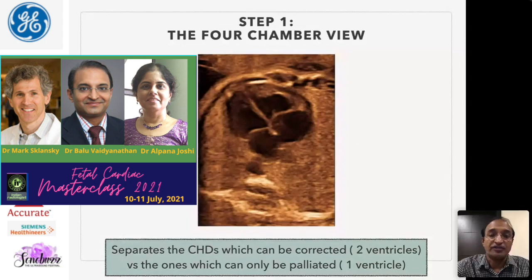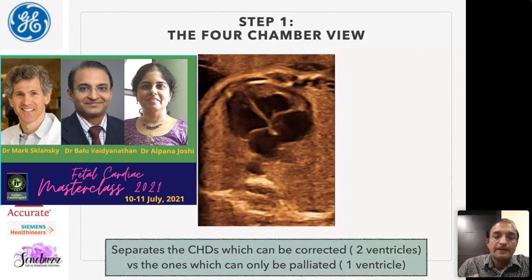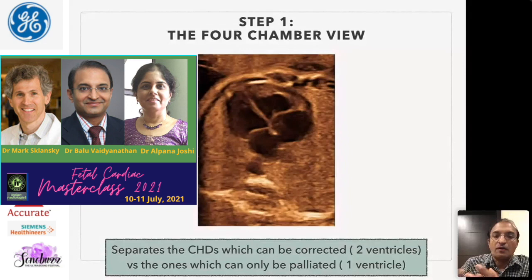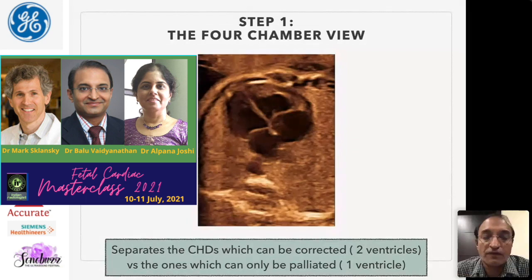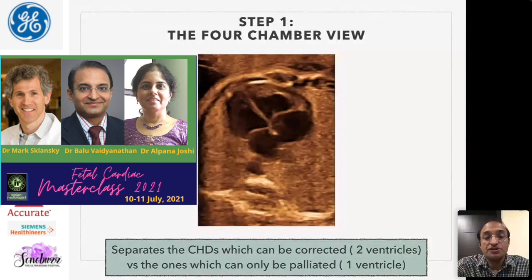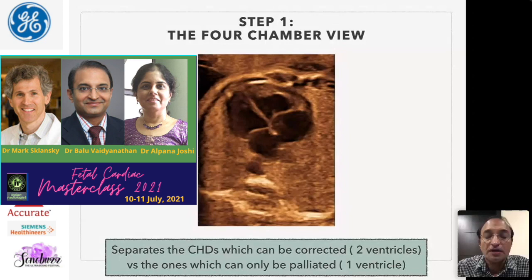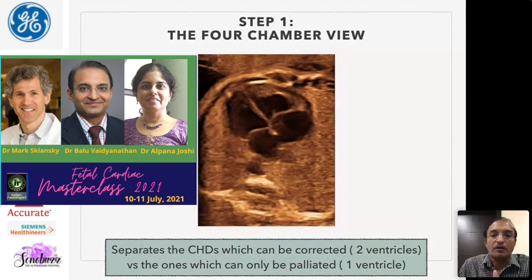The four-chamber view is a very important view of the fetal heart. It can be used to separate heart defects which can be offered complete surgical correction after birth. If there are two ventricles, all those defects can be corrected with good results. However, if there is hypoplasia of one ventricle or one atrioventricular valve, you are looking at a very complex defect that can only be palliated — requiring multiple procedures with less than optimum long-term results. That is why the four-chamber view has great prognostic value in fetal heart evaluation.